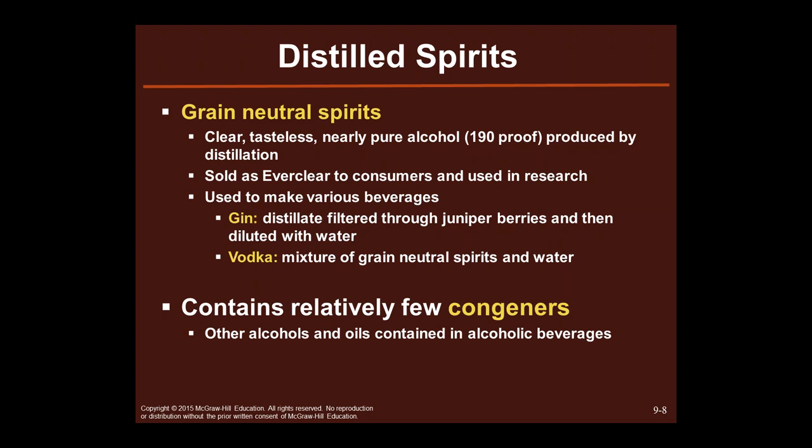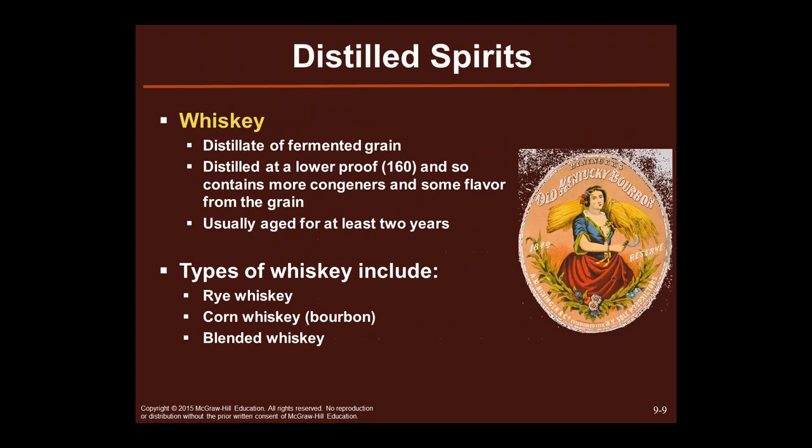These things contain relatively few congeners — other alcohols and other oils contained in alcoholic beverages. You're going to have more of those in things with lower proof and fewer in things that are higher proof. Whiskey is distilled from fermented grain at a lower proof — 160 rather than 190 — so it contains more congeners and some flavor from the grain, usually aged for at least two years.